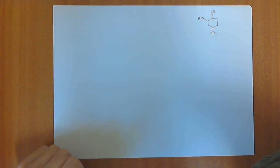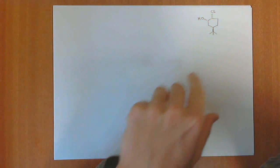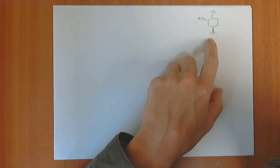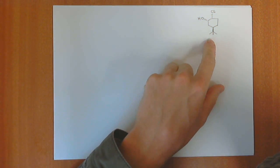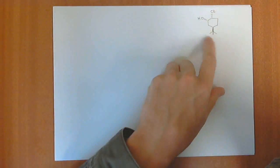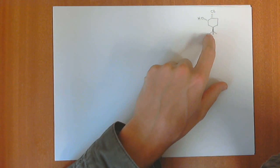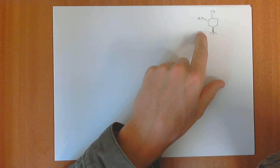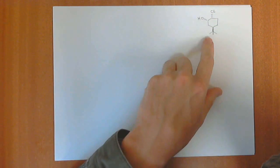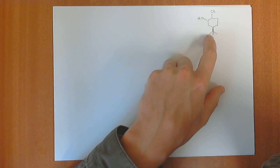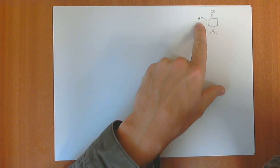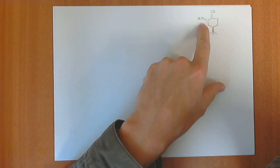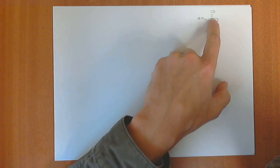I just want to do a recap on cyclohexane chair conformations. I've drawn out a cyclohexane that's been substituted. It is a little bit small here, but we have a t-butyl group, a hydroxyl group, and a chlorine over there.